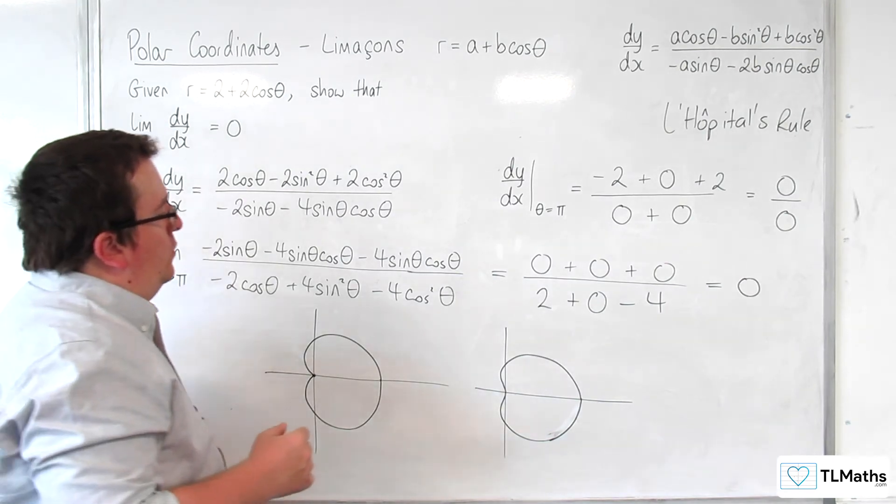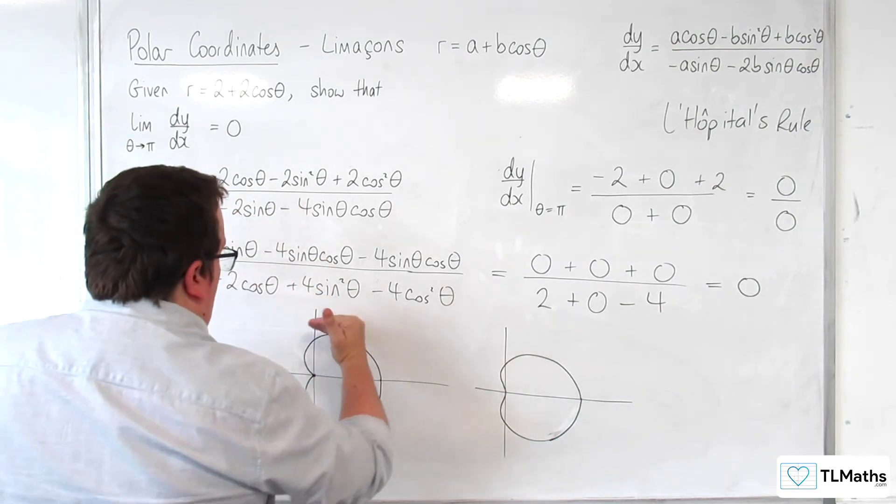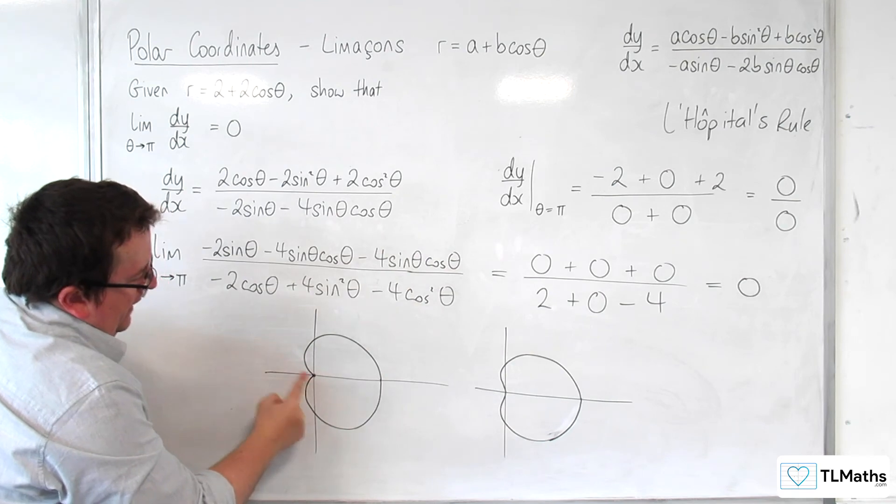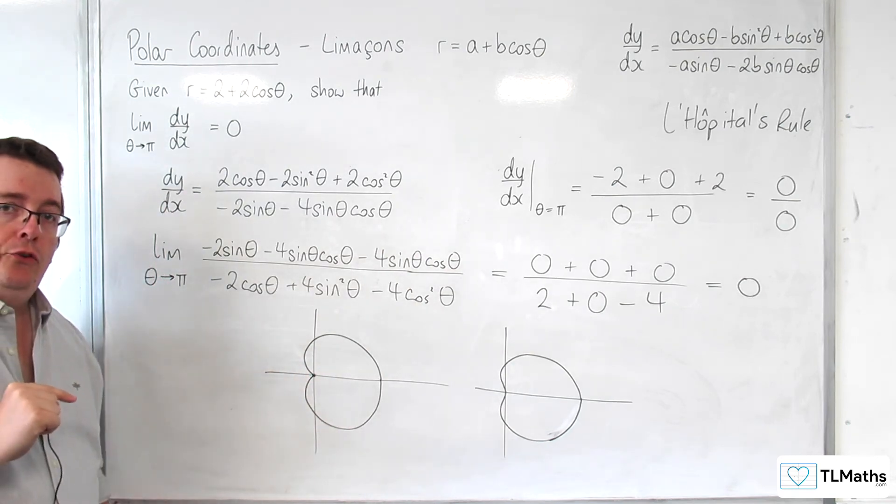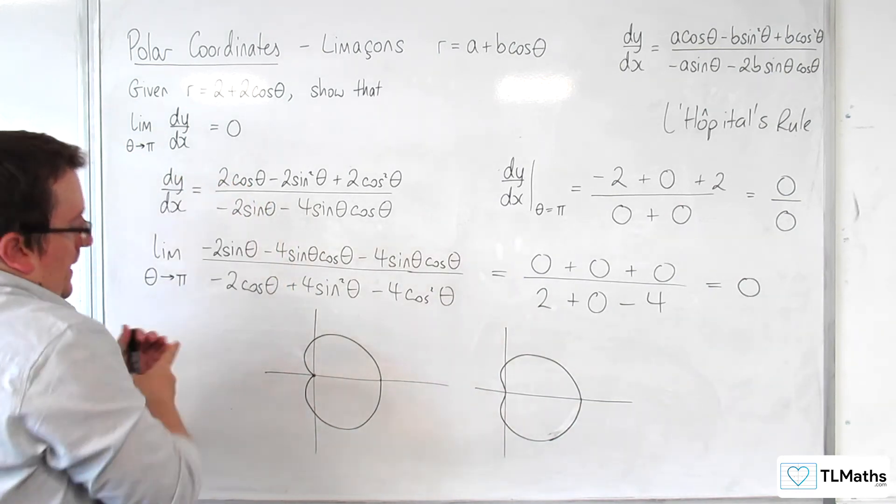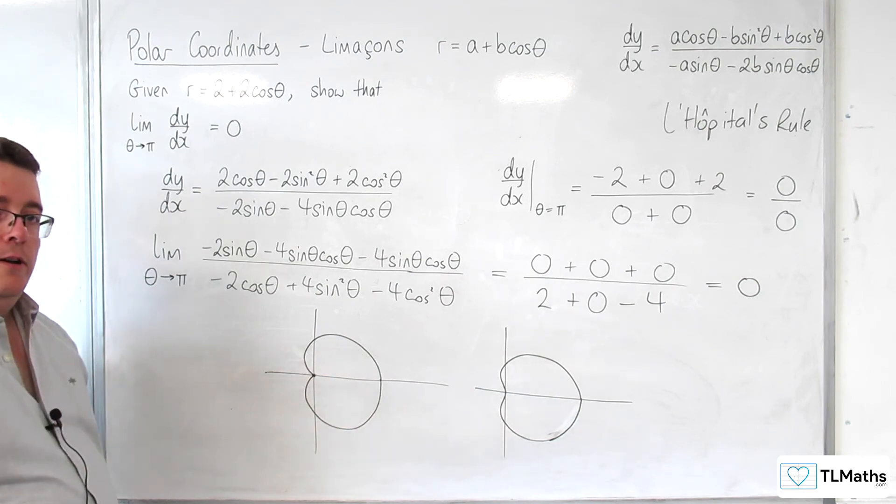And this is kind of showing as to why that would be the case. So, now you can see that as the curve is coming in, the gradient of the curve is tending to 0.